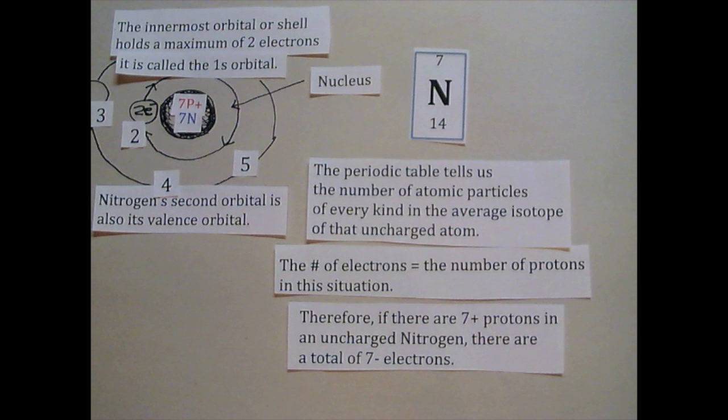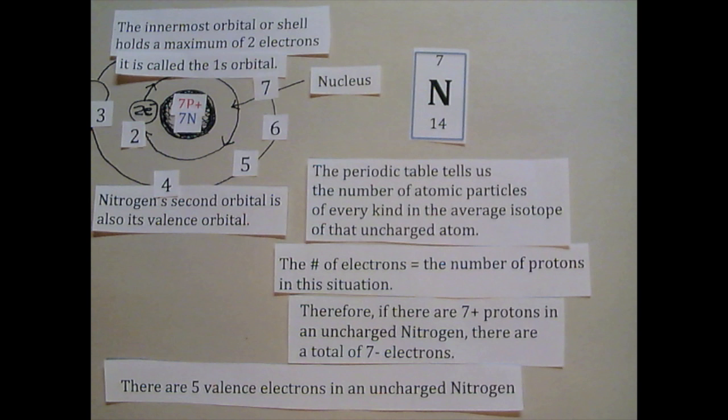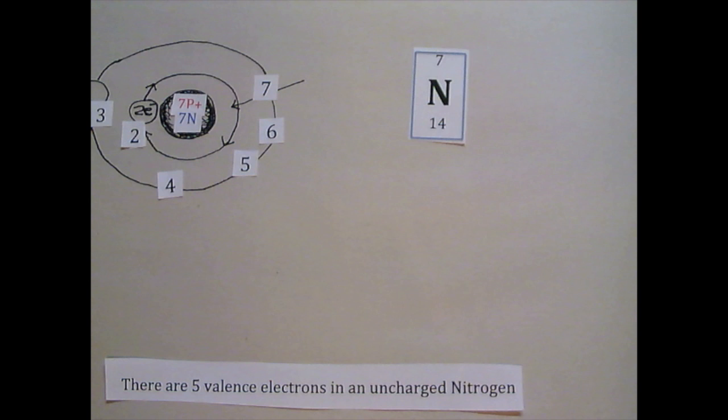Since 2 fit in the first shell or orbital, nitrogen has 5 electrons in its valence shell. These valence electrons determine how nitrogen reacts chemically with the matter in the universe around it.